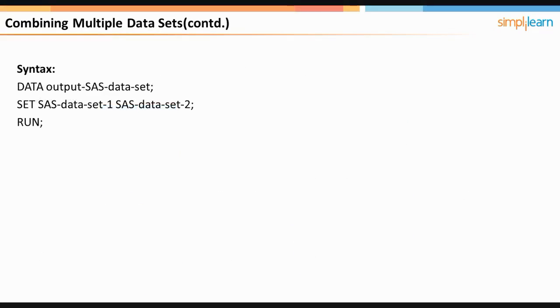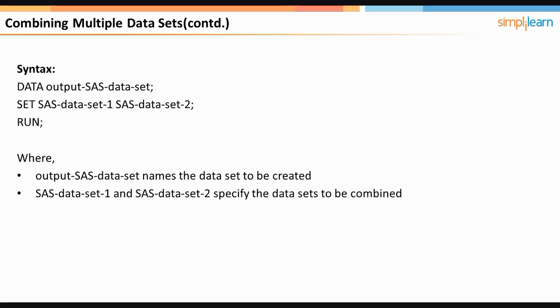The context of combining multiple data sets is as shown. Here, output SAS data set is the resultant data set created using the data statement. The set statement sets SAS data set 1 and SAS data set 2 as input data sets to be combined.